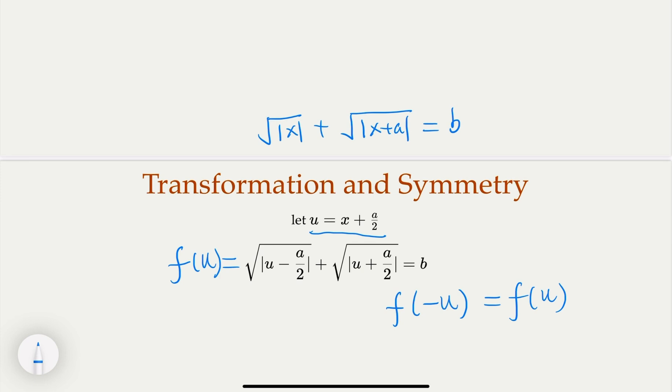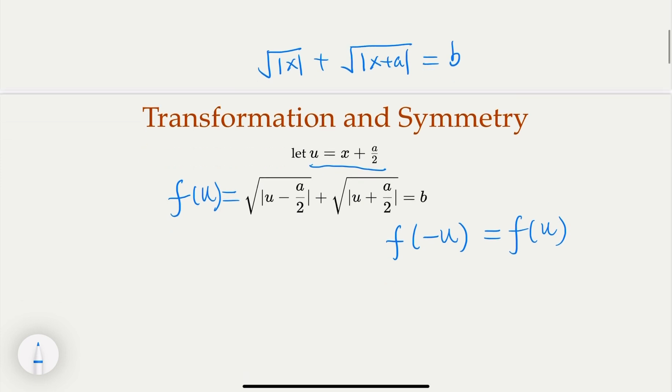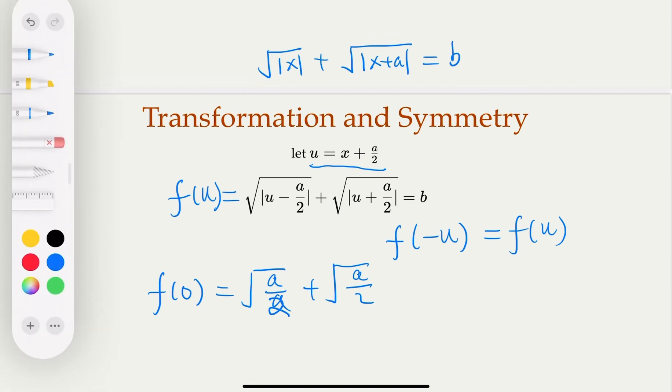Alright, so since there are three roots, so f(0) is the root. In this case, f(0) would equal to √(a/2) + another √(a/2). Yeah, and that equal to b. And the left hand side, of course, is 2√(a/2). And then you get √(2a) equal to b.